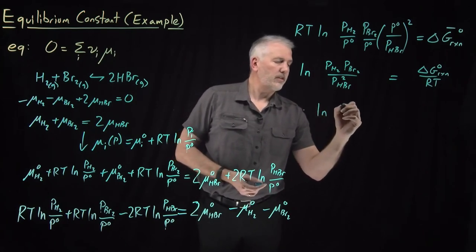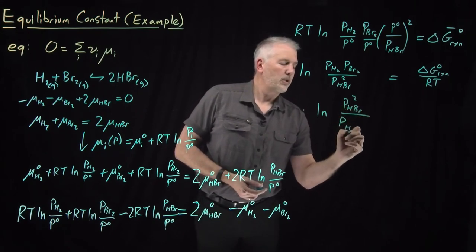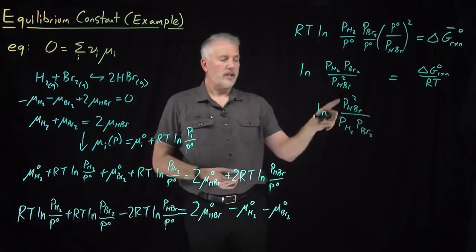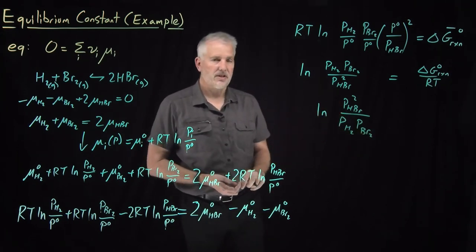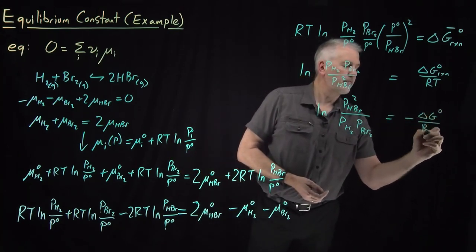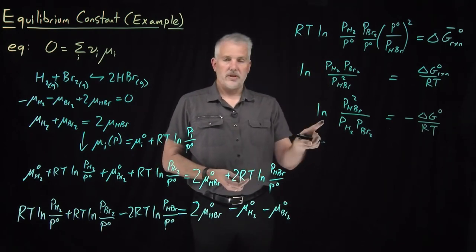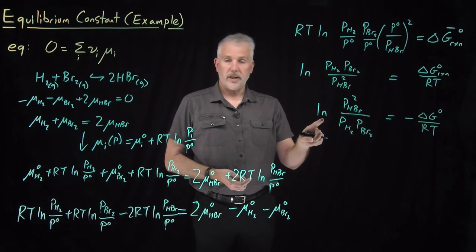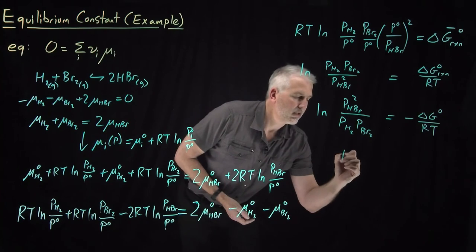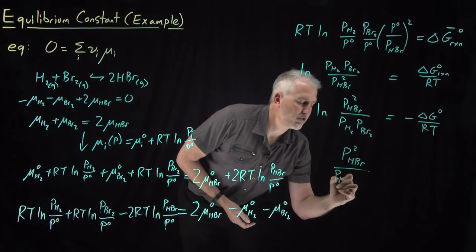Flipping it upside down gives pressure of HBr squared over pressures of H₂ and Br₂. When I invert what's inside the log I change the sign, so I move that sign to the right side. Now I can undo the natural log by exponentiating both sides: e to the ln of this quantity gives just this ratio of pressures — P_HBr² over P_H₂·P_Br₂.